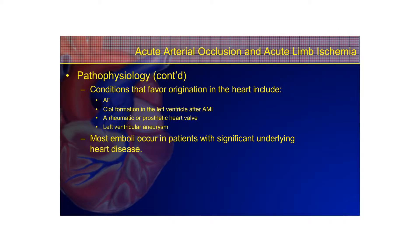Conditions that favor origination in the heart include atrial fibrillation, clot formation in the left ventricle after an acute myocardial infarction, rheumatic or prosthetic heart valve, and left ventricular aneurysm. With atrial fibrillation, the atria are quivering and blood flow is sluggish — blood can coagulate and stay turbulent, like a log stuck at the bottom of a waterfall. Every once in a while those clots break loose and cause damage, which is why many AFib patients are on blood thinners chronically.